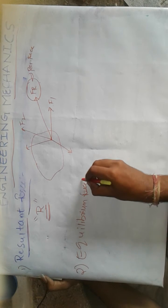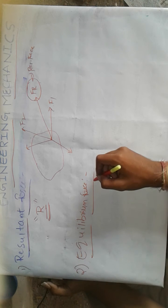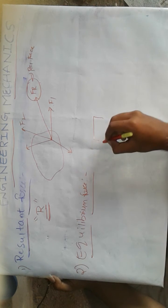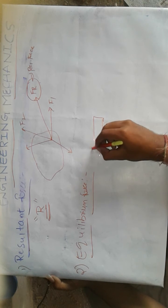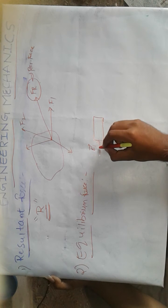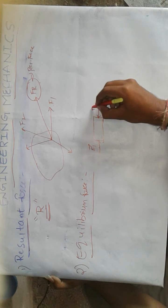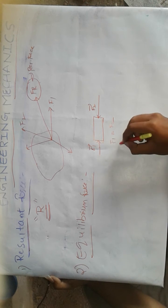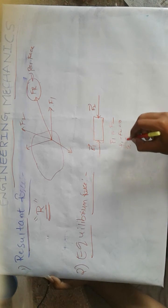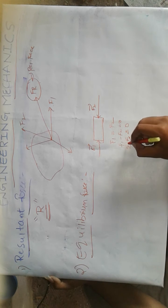Equilibrium force is also a single force which keeps the body at rest or in equilibrium. Suppose this body is in motion due to the force F1 applied on it. To keep the body at rest or in equilibrium — in a static condition — I should apply another force F2 where F1 equals F2, that means F1 minus F2 equals zero. The sum of forces equals zero in the x-direction. Then they are said to be in equilibrium.